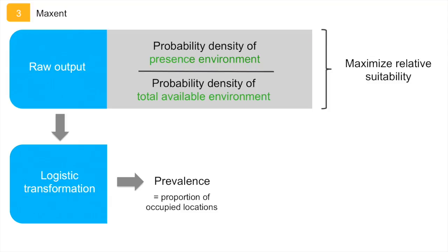The value for prevalence can be defined by the user, but Maxent uses a default of 0.5, and we advise to take care with its default, as this is not appropriate for rare species.